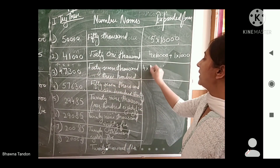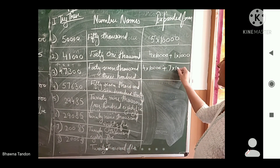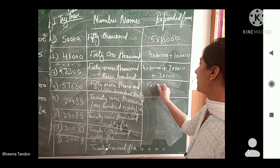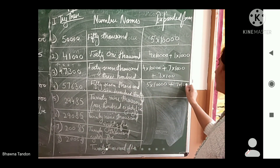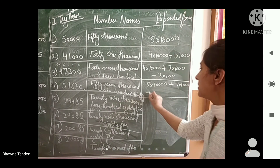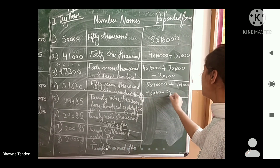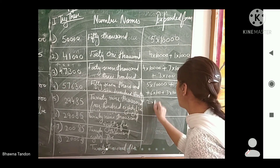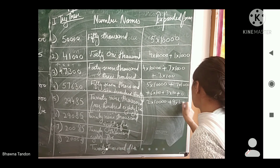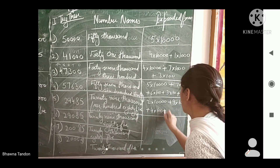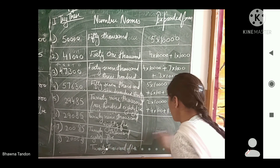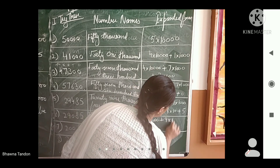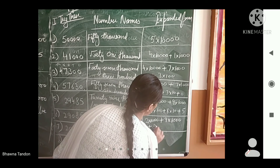For 47,300: 4 × 10,000 + 7 × 1,000 + 3 × 100. For 29,485: 2 × 10,000 + 9 × 1,000 + 4 × 100 + 8 × 10 + 5. For 29,085: 2 × 10,000 + 9 × 1,000 + 0 × 100 + 8 × 10 + 5.